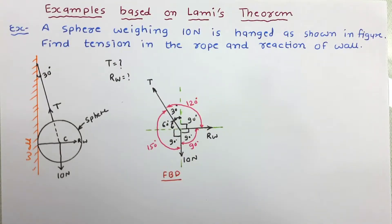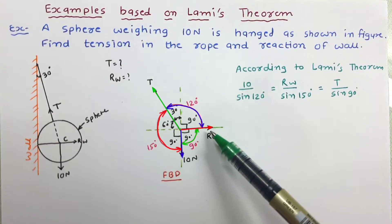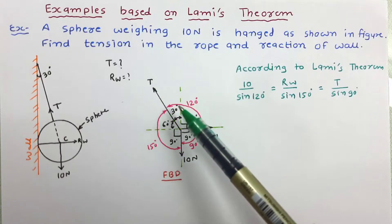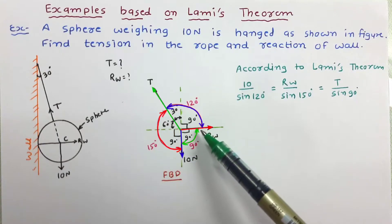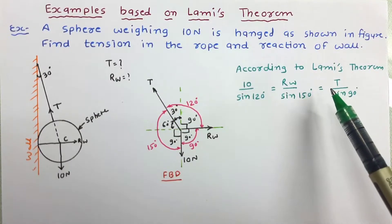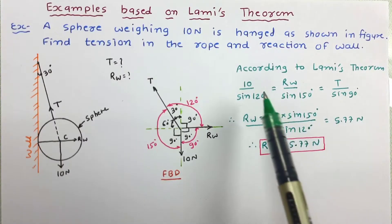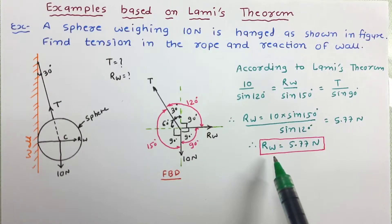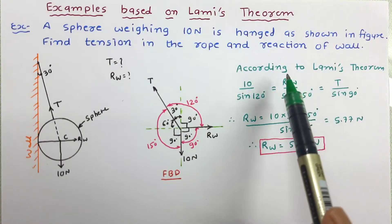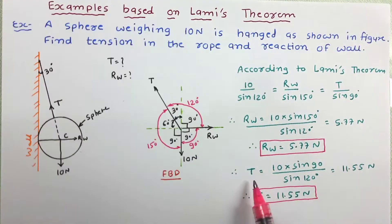Now we can apply Lamy's theorem. According to Lamy's theorem: Rw upon sin 150 equals 10 Newton upon sin 120, equals T upon sin 90. Now let us solve these equations. By solving the first two, we get the value of reaction of wall Rw as 5.77 Newton. Solving the other pair of equations to work out T, we get tension T as 11.55 Newton.